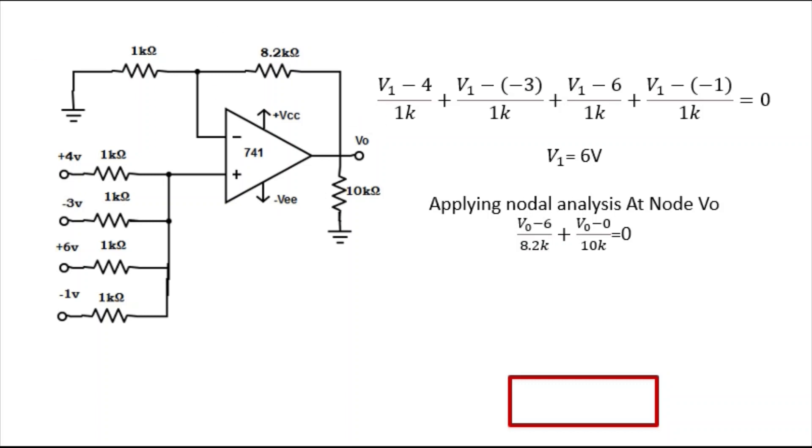Both the currents are outgoing. This is the outgoing current: V0 minus 6 divided by 8.2k, because this node is having 6 volt potential. Similarly, V0 minus 0 divided by 10k. V0 minus 0 divided by 10k.